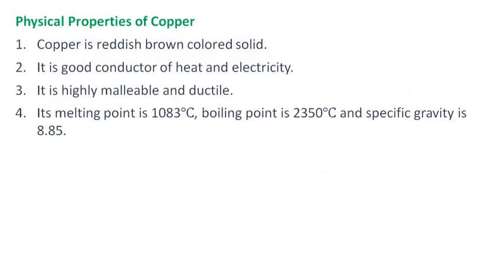Physical properties of copper: Copper is a reddish-brown colored solid. It is a good conductor of heat and electricity and is highly malleable and ductile. Its melting point is 1083 degrees Celsius, boiling point is 2350 degrees Celsius, and specific gravity is 8.85.